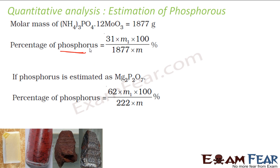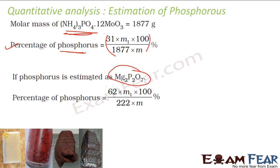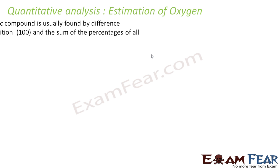There are two approaches as explained. The percentage of phosphorus formula in the first case, where you get (NH₄)₃PO₄·12MoO₃, uses one formula. If you precipitate Mg₂P₂O₇ using the magnesium approach, you use a different formula. Either you precipitate ammonium phosphomolybdate or Mg₂P₂O₇, then dry and calculate the percentage of phosphorus accordingly.